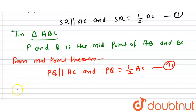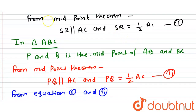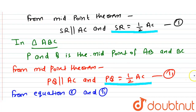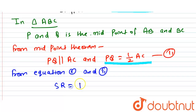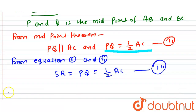Now from equation one and two, we can conclude that SR equals half AC and PQ is also equals half AC, so SR equals PQ. Therefore SR equals PQ equals half AC. Suppose this is equation number three.